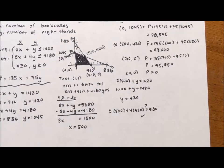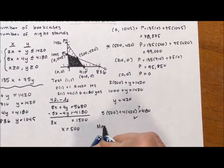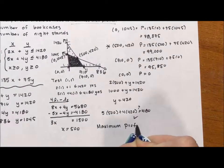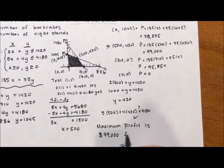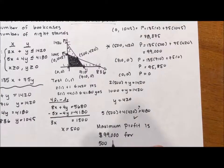So my final answer is going to read the maximum profit is $99,000 for 500 bookcases and 420 nightstands.